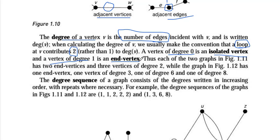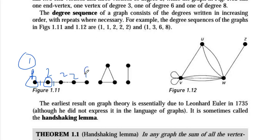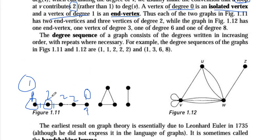A vertex of degree one is called an end vertex — it has only one edge. For example, for this vertex how many edges are there? One. So degree of vertex is one. For this vertex there are two edges, so degree is two. These two vertices which have a degree of one are called end vertices. This is only one and so both are end vertices.